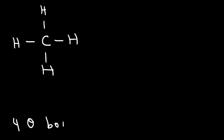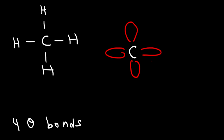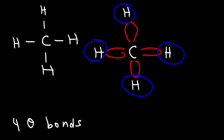Going back to methane — methane has four single bonds, so it has four sigma bonds. The carbon in methane has four sp3 hybrid orbitals, and hydrogen can only form an s orbital because it has one electron in its 1s sublevel. If a test question asks for the hybridization of the central carbon atom in methane, the answer is sp3.